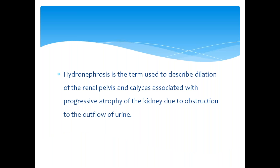Hydronephrosis is the term used to describe dilation of the renal pelvis and calyces associated with progressive atrophy due to obstruction to the outflow of urine. This dilation of the renal pelvis and calyces leads to cortical atrophy because of an obstruction in the outflow of urine.